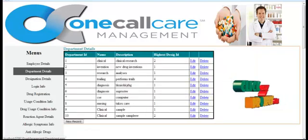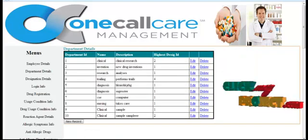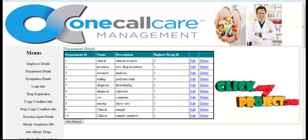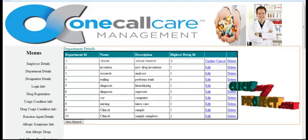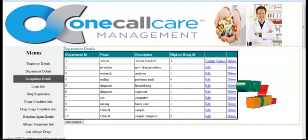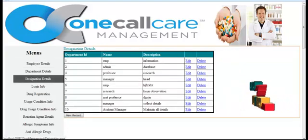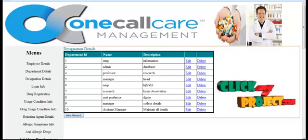In the Department module, the Department Details will be shown like that, and the Department Details can also be updated. The Designation Details module shows their designation details like that.